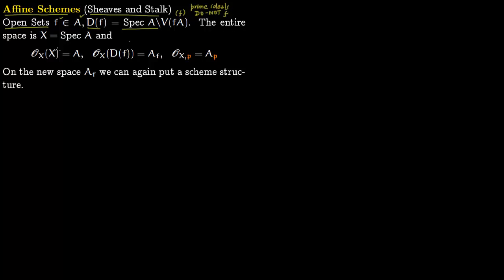Your entire space is Spec(A), which we denote by X. We have seen how to construct this topological space Spec(A). Now we are going to put a sheaf of rings on it, which we will call the structure sheaf. On the entire space X you put the ring A — the ring you started with. On any open set D(F) you put A localized at F.